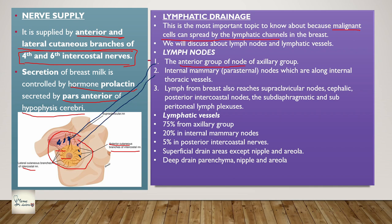Lymph from the breast also reaches the supraclavicular nodes, cephalic nodes, posterior intercostal nodes, subdiaphragmatic nodes, and subperitoneal lymph plexuses. Here you can see the supraclavicular nodes, cephalic nodes, the subdiaphragmatic, and subperitoneal nodes. In terms of percentages: 75% of the lymph drains into the axillary group of nodes, 20% to the internal mammary nodes, and 5% to the posterior intercostal nodes. This is a very important viva question.